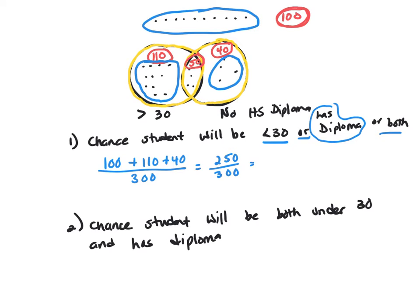In the second question, it's an and. One student, chance one student will be both under 30 and a high school diploma. The only students like that, I'm going to draw in green now.